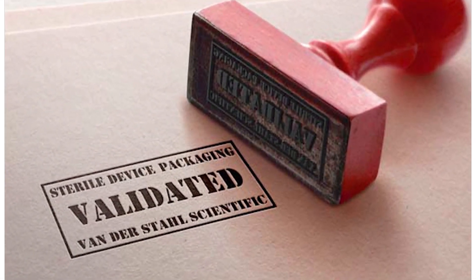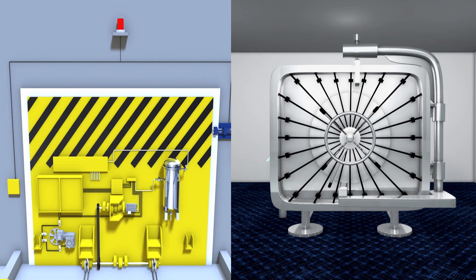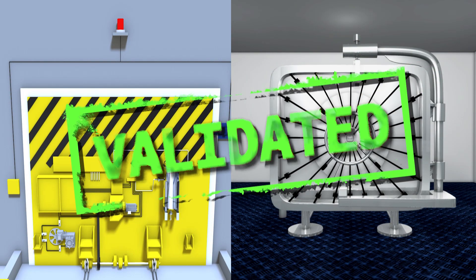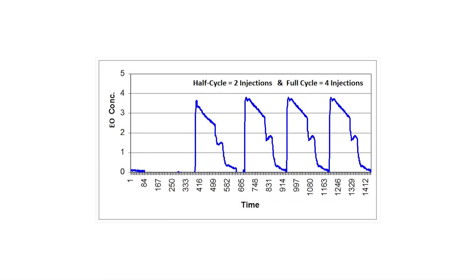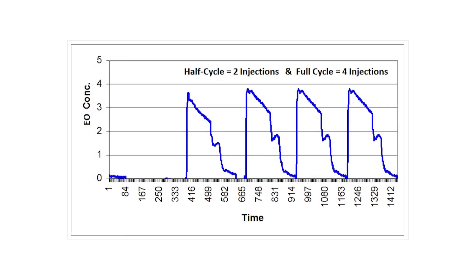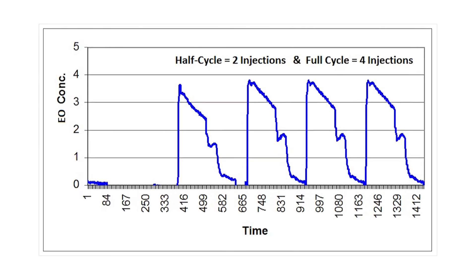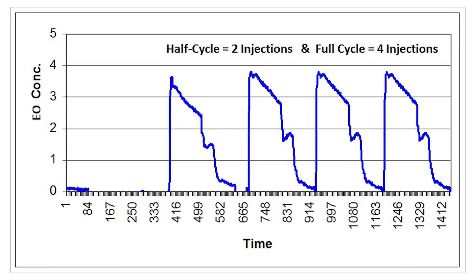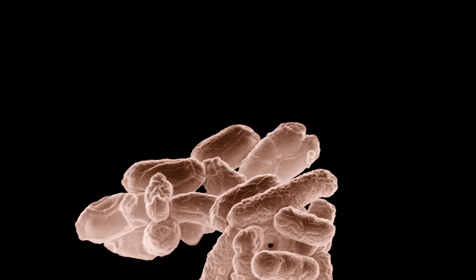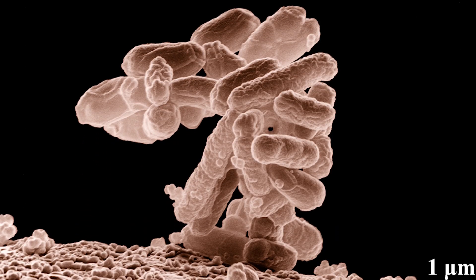Process Validation: Regulations stipulate that both sterilization processes are validated to ensure they repeatedly achieve sterility assurance levels. The most popular procedure for validating the ethylene oxide sterilization process is the half-cycle validation process using biological indicators as process challenge devices.